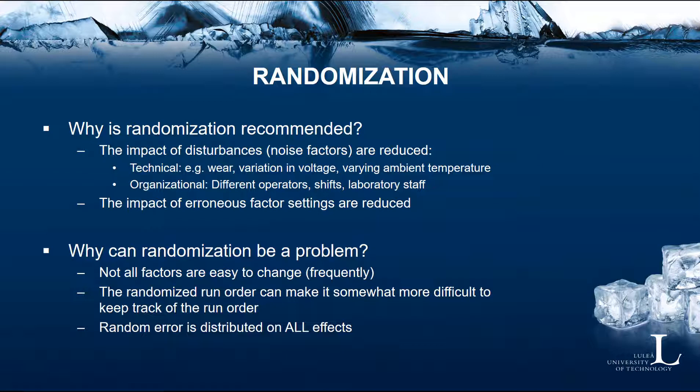Randomization can also be a problem, of course, because not all factors are easy to change frequently. It can also make it somewhat more difficult to keep track of the run order and make sure that all the factor settings are correct in each run. Random error is also distributed on all effects, and we need to be aware of that in the randomized run order.